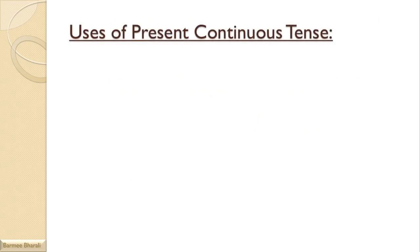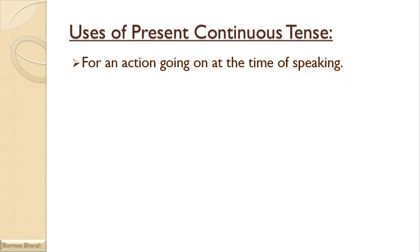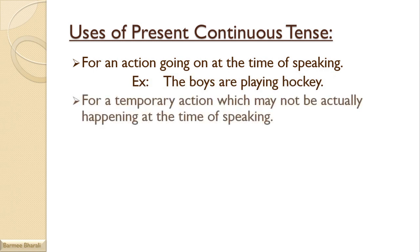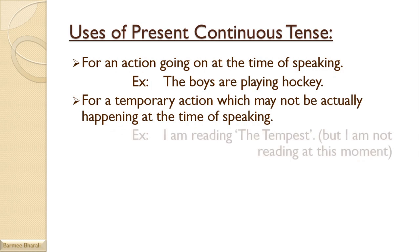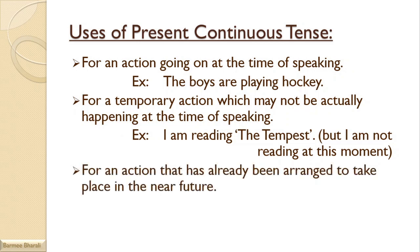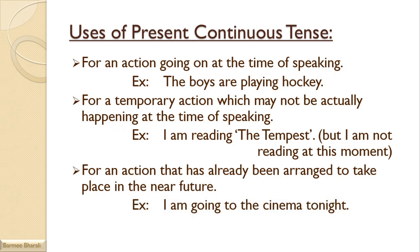Now we have come to the uses of present continuous tense. It is used for an action going on at the time of speaking, like 'The boys are playing hockey.' It is also used for a temporary action which may not be actually happening at the time of speaking, like 'I'm reading The Tempest' — but I'm not reading it at this moment. It is also used for an action already arranged to take place in the near future, like 'I'm going to the cinema tonight.'